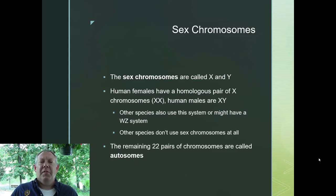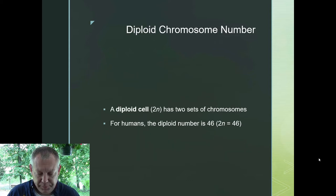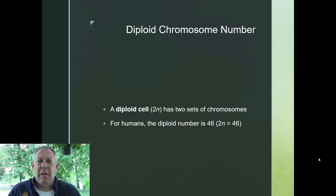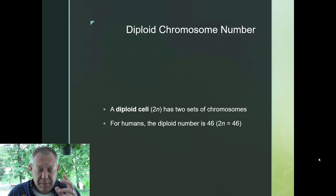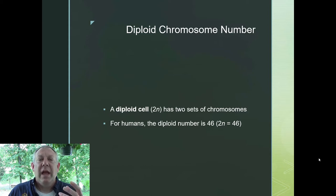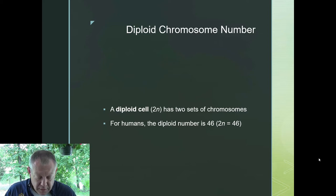The other 22 pairs of chromosomes in humans are called the autosomes, or the body chromosomes. Any cell that has two sets of chromosomes is called diploid, signified by 2N. Most of the cells in your body are diploid — half of those chromosomes came from your mom and half from your dad. For humans, the diploid number is 46. So in every one of our cells we have 46 chromosomes arranged in 23 pairs. That means our haploid number, or half that, is 23.